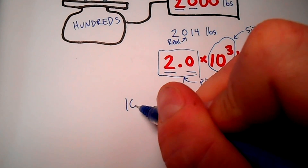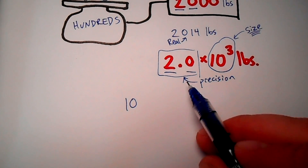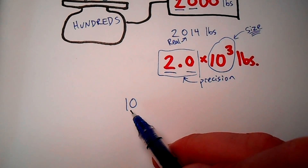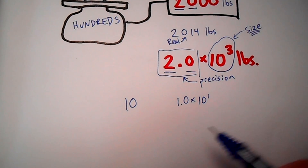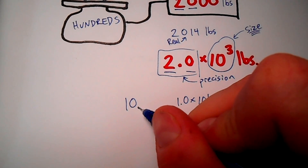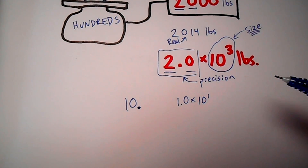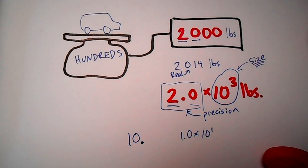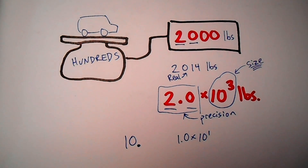One more example: if I had the number 10 and wanted to show it had two significant figures, I could use scientific notation and write 1.0 times 10 to the first. But another option is to simply write in the decimal — '10.' — which shows that both the one and the zero are significant and that there's no tenths place value to report. So that covers sig figs: what they are, how to identify them, and how many are in a value. There are future videos on how to work with sig figs and round to the correct number. Thanks!